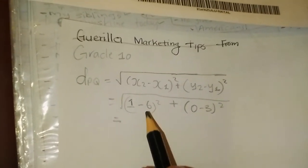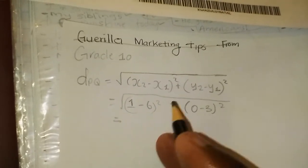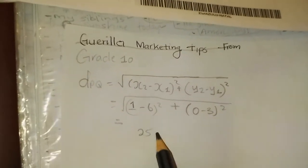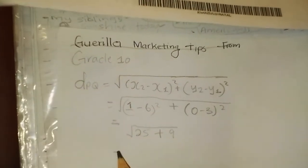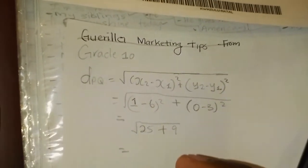So that's minus 5 squared. We know that's going to be 25, plus negative 3 squared, that's going to be 9. Square root of that. 25 plus 9, that's 34.